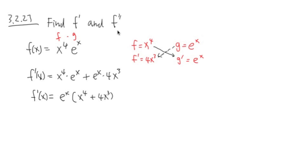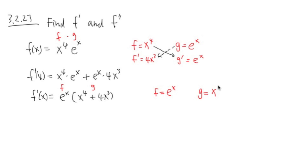And now for the second derivative, I'm just going to look at my first derivative and take the derivative of the first derivative — just think about this as a new question. Once again, this is the product of two things, so I'm going to use the product rule. I'll label the first part as my red f, and the second part — which is this entire parenthesis — as my red g. On the side, f is equal to e to the x, and g is equal to x to the fourth plus 4x to the third power.